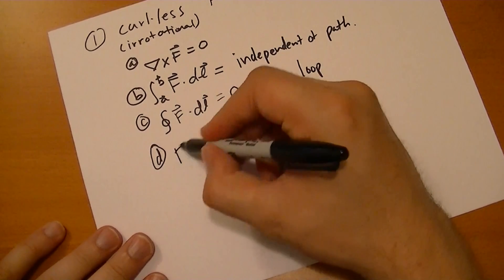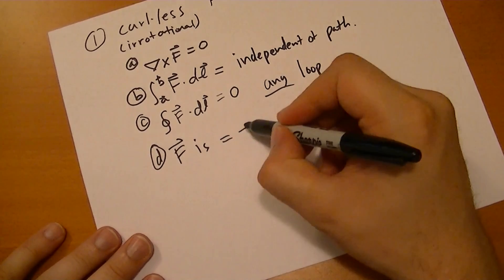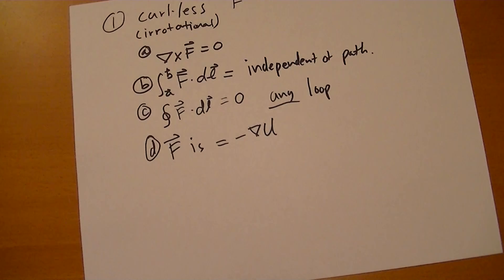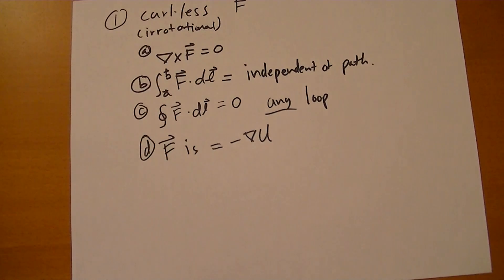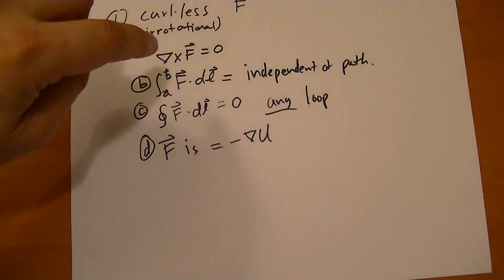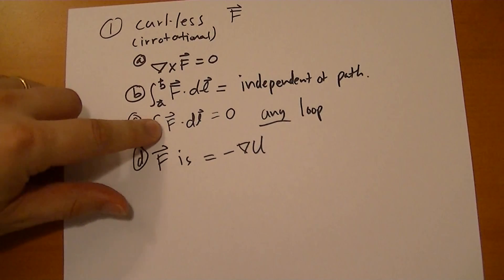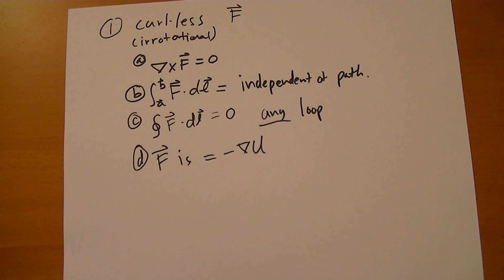And the last one is F is the gradient of some U. You remember that from the Helmholtz equation. So if any one of these conditions are met, all the others are met. So if you happen to encounter a field where the curl is zero, then you know immediately that the path integral is independent of the path, closed loop integral is zero, and F is some scalar potential, the divergence of some scalar potential.